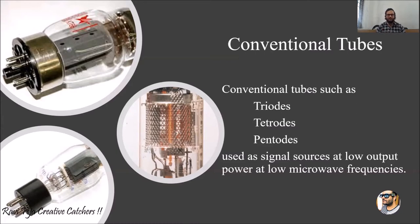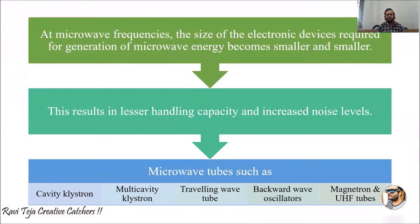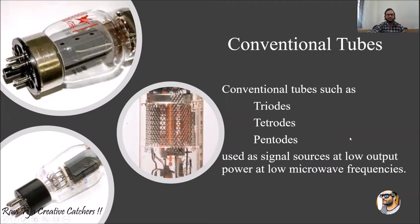There is a need for high power as well as high frequency signals for these advanced electronic devices. If we use conventional tubes like pentodes and tetrodes to generate more microwave energy, they result in a lot of noise levels as well as lesser handling capacity.